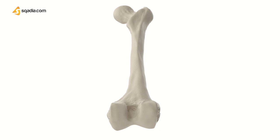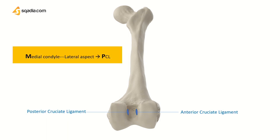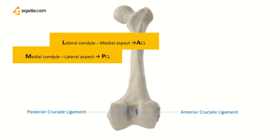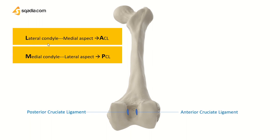Looking at the intercondylar notch, the intercondylar fossa contains two facets for the attachment of intracapsular knee ligaments. On the medial aspect of the lateral condyle is the anterior cruciate ligament (ACL), and on the lateral aspect of the medial condyle is the posterior cruciate ligament (PCL). Notice how the condyle and aspect are opposite to each other — you can remember this easily by the mnemonic LM and AP.